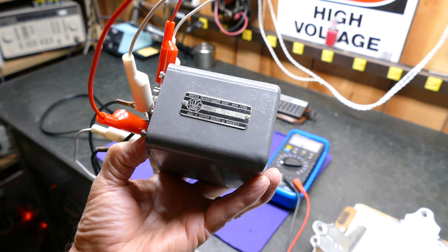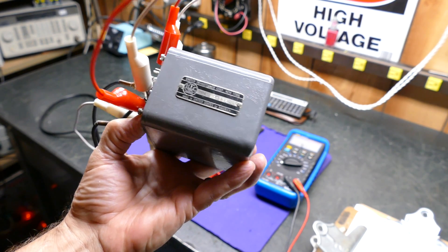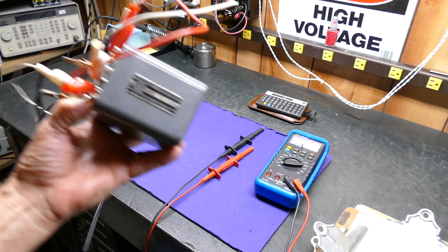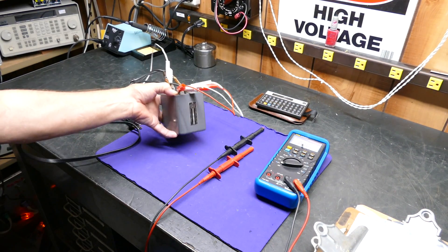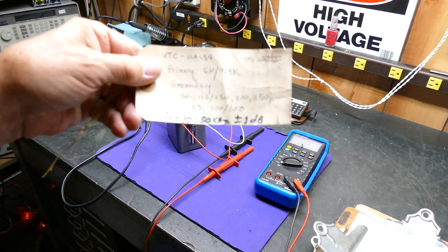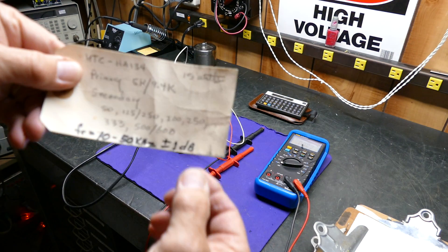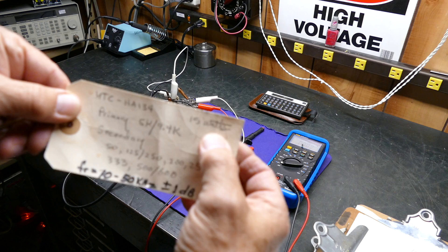This is a UTC type HA-134. Very nice looking little transformer. You see them on eBay for tremendous prices. Here's some notes I made on it some time ago. It's supposed to have a frequency response of 10 hertz to 50 kilohertz plus or minus 1 dB. They're rated at 15 watts.